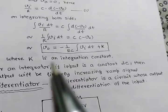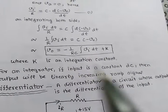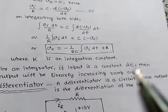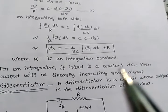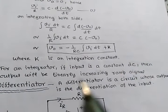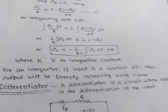The value of the integration constant depends on the initial conditions. In an integrator circuit, if we apply a constant DC voltage at the input, then the output will be a ramp signal.